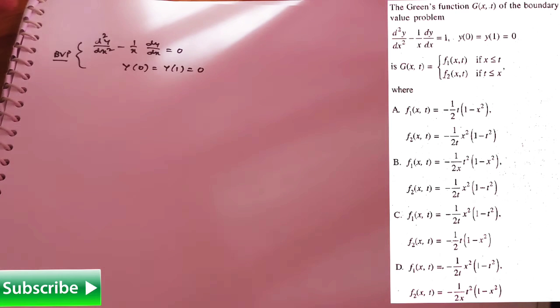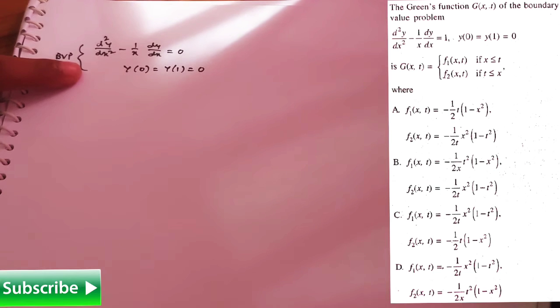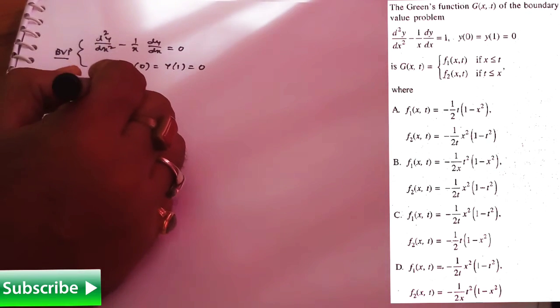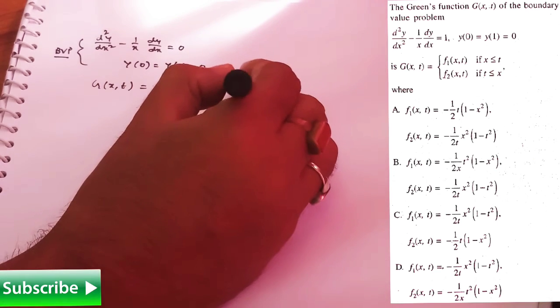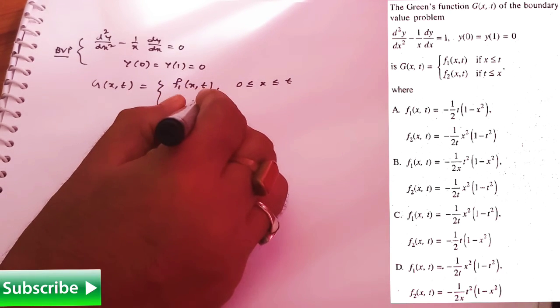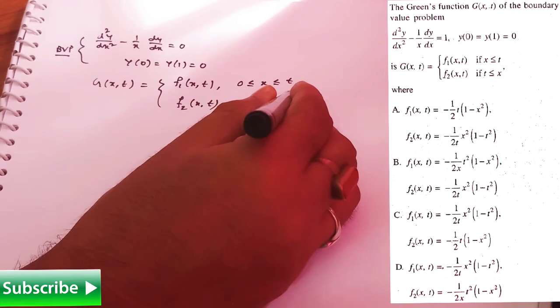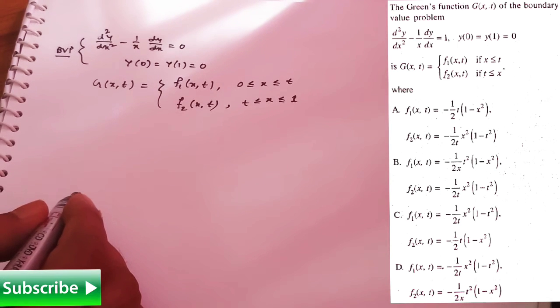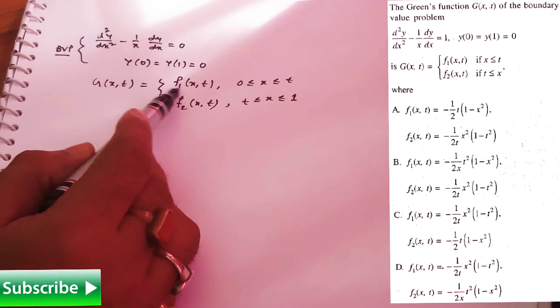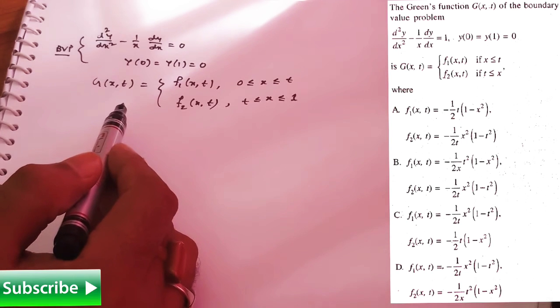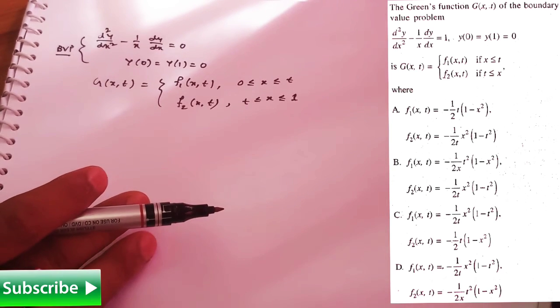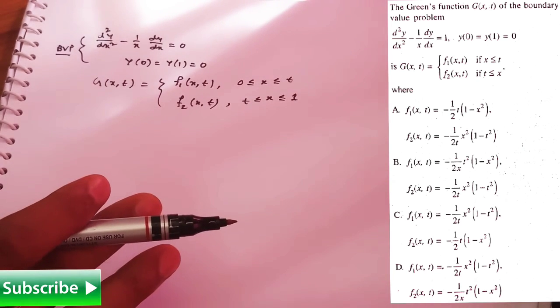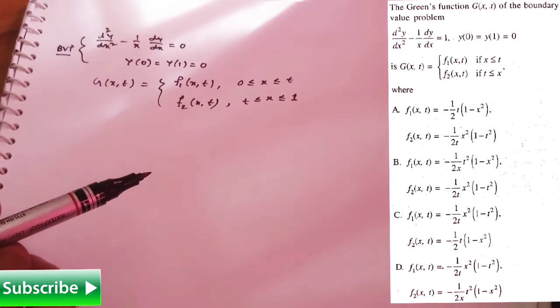The boundary value problem is given, and we are asked what the Green's function of this problem is. The Green's function g(x,t) is given as f1(x,t) for 0 ≤ x ≤ t, and f2(x,t) for t ≤ x ≤ 1. The question is about the expressions for f1 and f2 from the options. Note that all the options given here are incorrect, but you will get the correct answer after solving this problem.